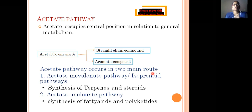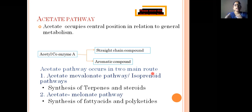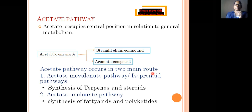In the acetate-mevalonate pathway, HMG-CoA reductase undergoes reduction and forms mevalonic acid — hence it is also called the HMG-CoA reductase pathway. This pathway mainly involves the synthesis of terpenes and steroids.